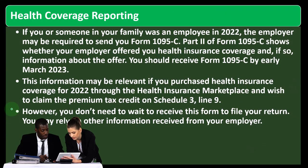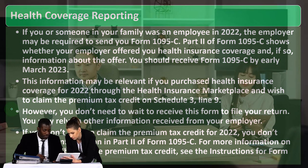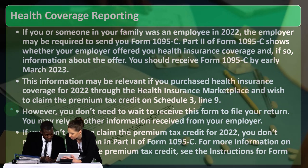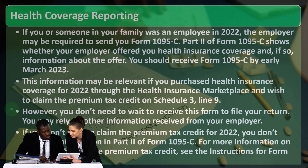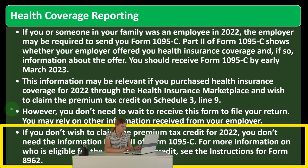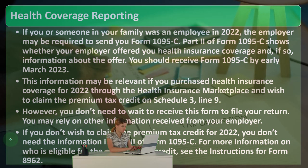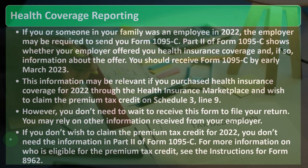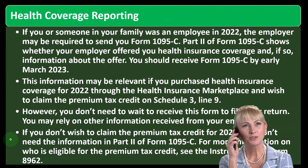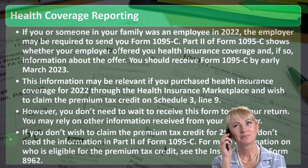You don't need to wait to receive Form 1095-C to file your return — you may rely on other information received from your employer. Usually if you're not participating in the marketplace, it's a more straightforward situation. On the state side you might have to confirm you had health insurance, but you're not doing that comparative reconciliation because you didn't get an advanced credit to tie out. If you don't wish to claim the premium tax credit for 2022, you don't need the information in Part 2 of Form 1095-C.